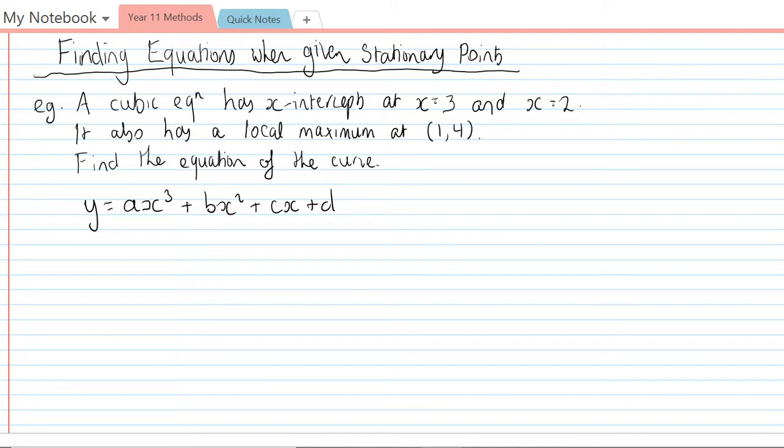We're told that we have x-intercepts of 3 and 2, which means we have the coordinates (3,0) and (2,0), and we also have a local maximum at (1,4). This information can give me three equations, but the problem is that I have four variables and I actually need a fourth equation to be able to get the answer.